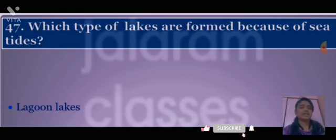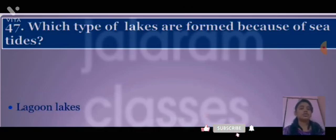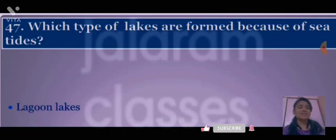The last question is: which type of lakes are formed because of sea tides, and there are 11 lakes in this chapter. We have now completed our objective questions of this chapter. If you have any doubt in any subject, you can ask us in the comment section. Don't forget to like the video, and for long questions please subscribe to the channel. Thank you.